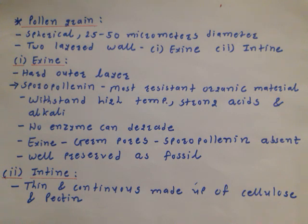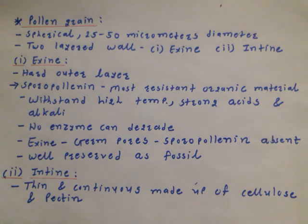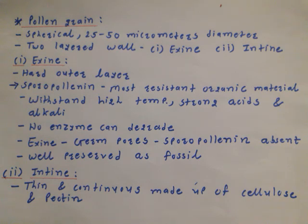Exine in detail: it is the outermost, hard layer. One special characteristic observed is that it contains sporopollenin, which is the most resistant organic material. It withstands high temperature, strong acids and alkalis. No enzyme can degrade this structure. In the exine layer, germ pores develop — areas where sporopollenin layering is absent. Through these germ pores, at maturity, pollen tube develops. Pollen grains are well preserved as fossils due to the sporopollenin structure.